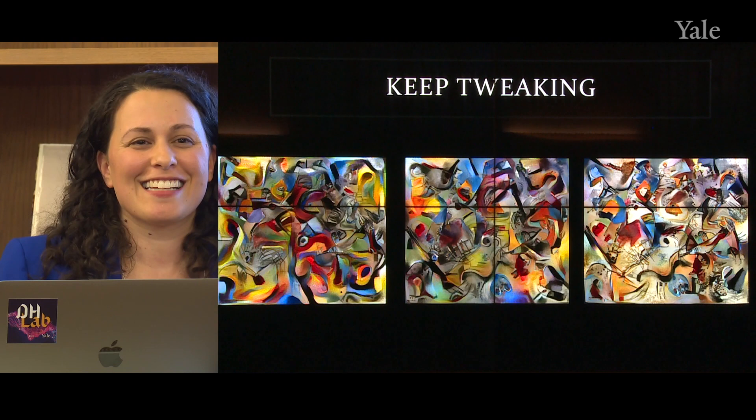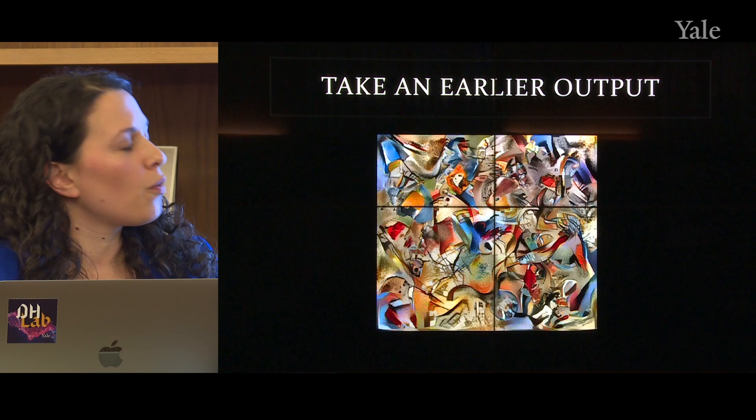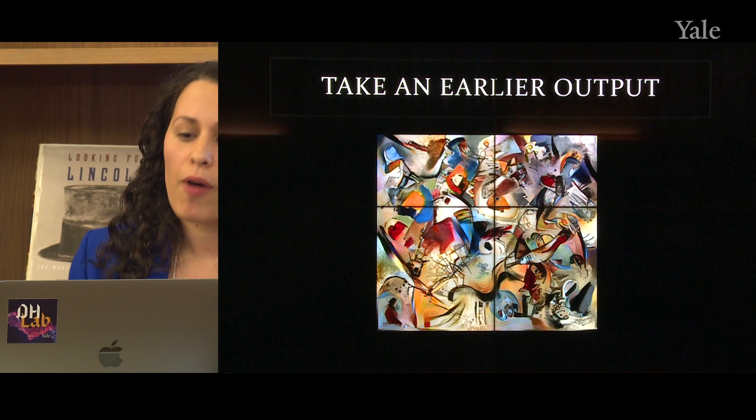You could also take from an earlier output in that epoch if you were interested. This is going to cycle through each 100 epochs and give you an output image. So depending on what the goal is for the project, you could take from one of those earlier stages and have that be an image that you want to work with.